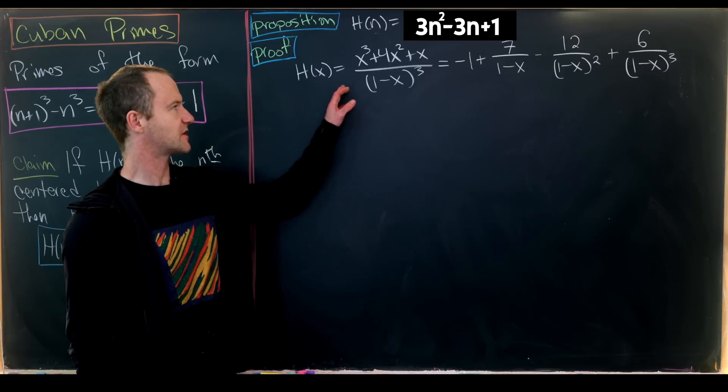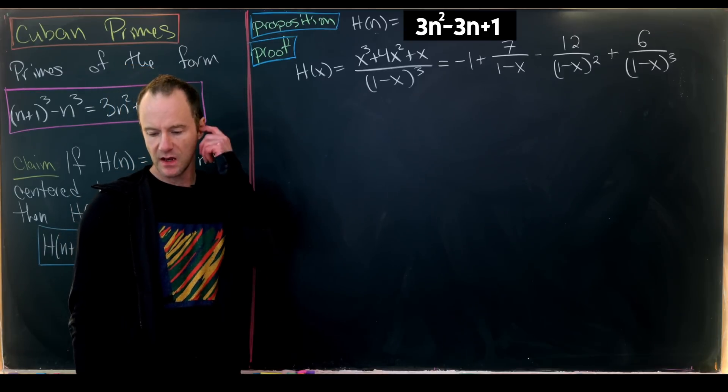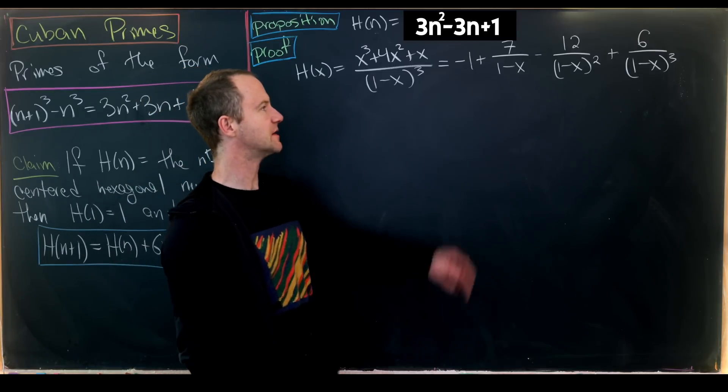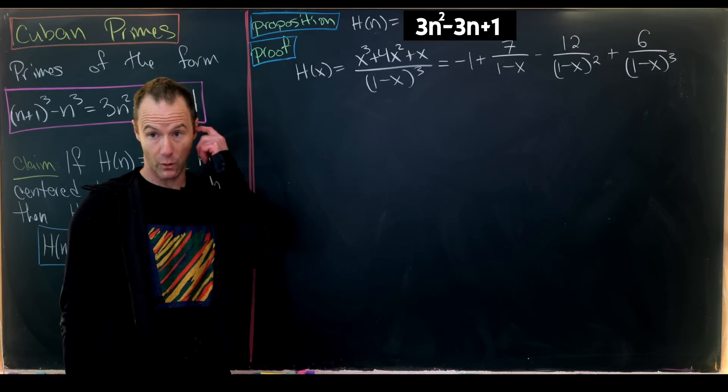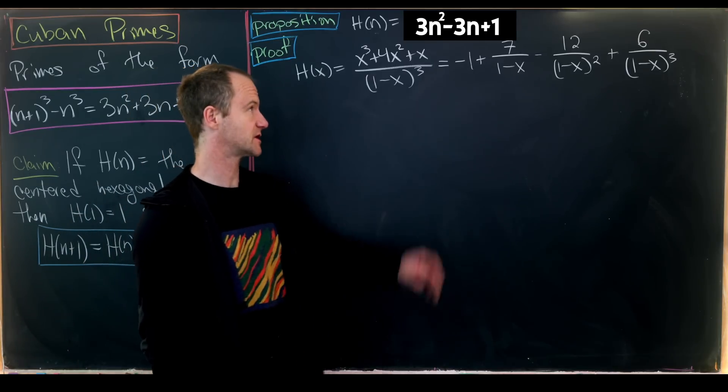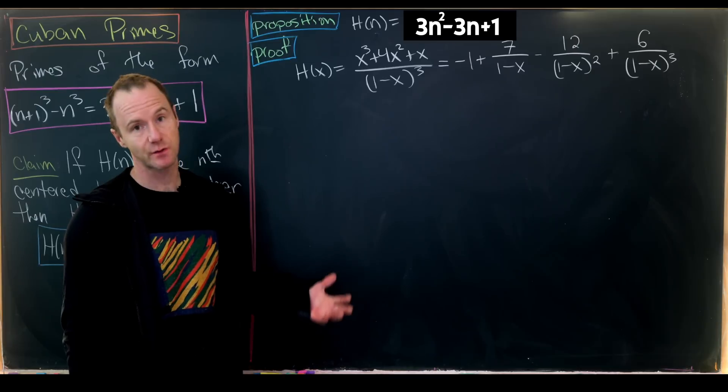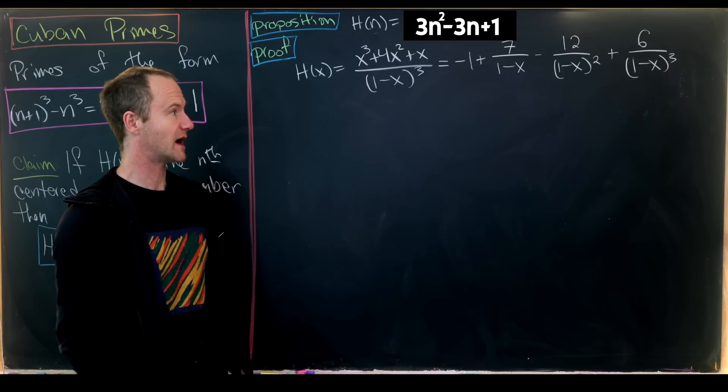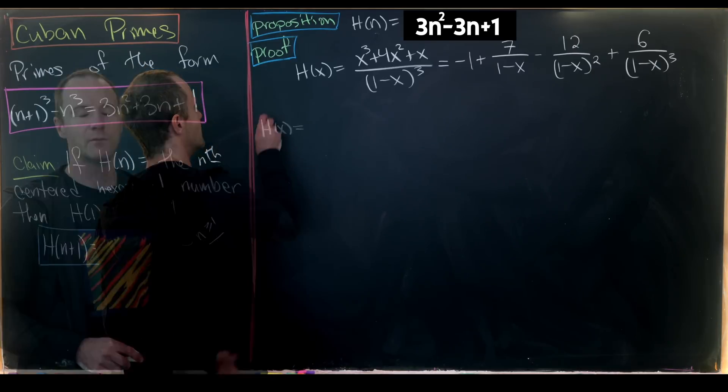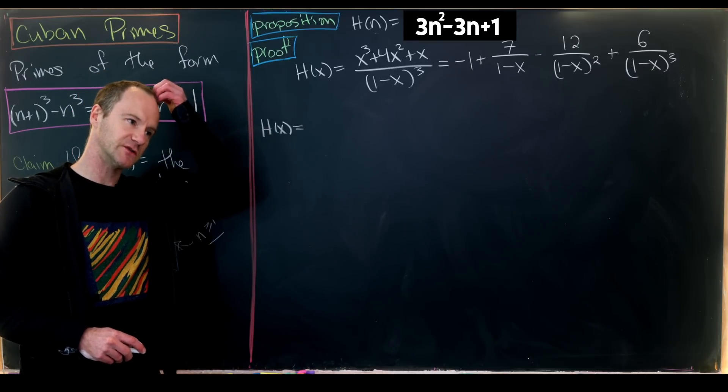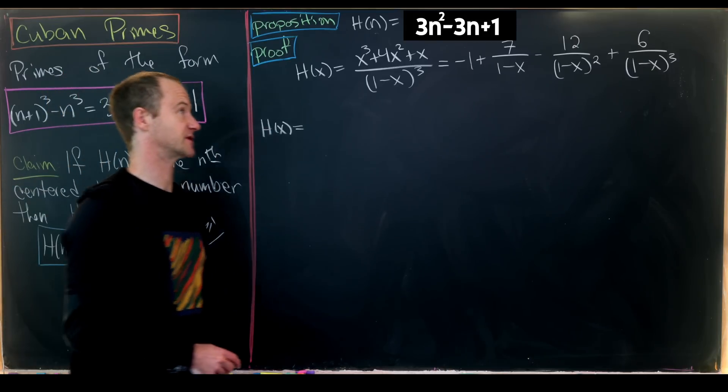Now we work towards the closed formula. Using partial fractions: H(x) = -1 + 7/(1-x) - 12/(1-x)² + 6/(1-x)³. We'll write each term as derivatives of geometric series.